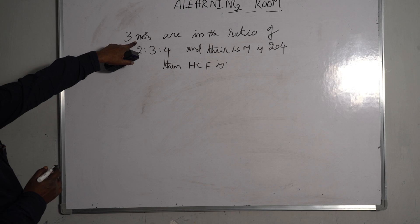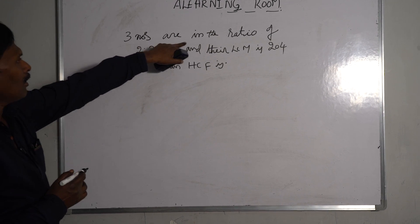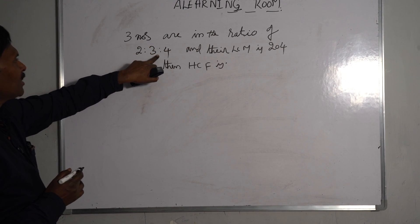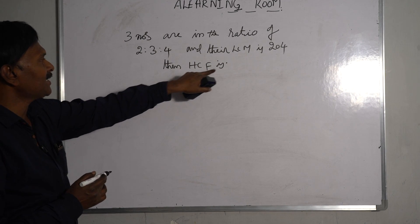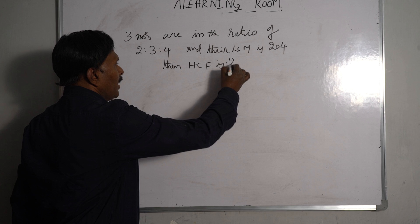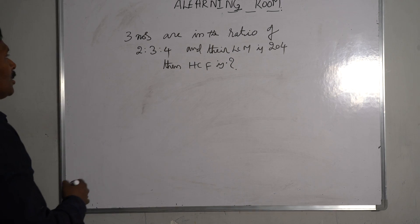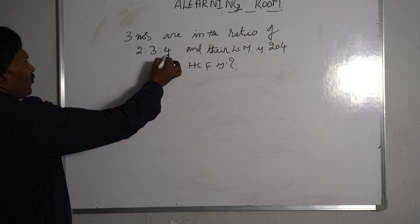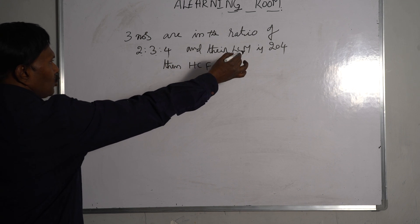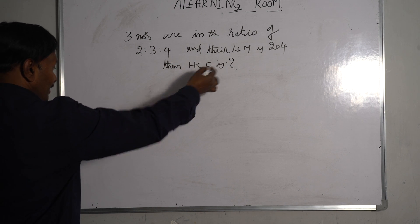See the problem. Three numbers are in the ratio of 2:3:4 and their LCM is 204. Then HCF is what? We have to find the HCF.